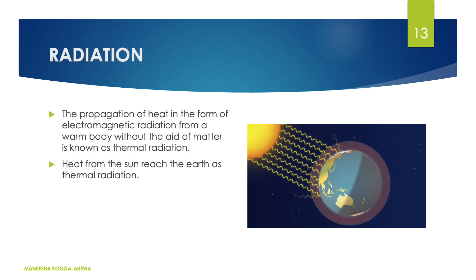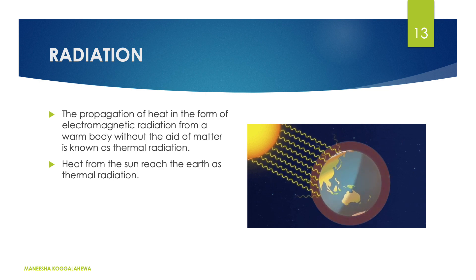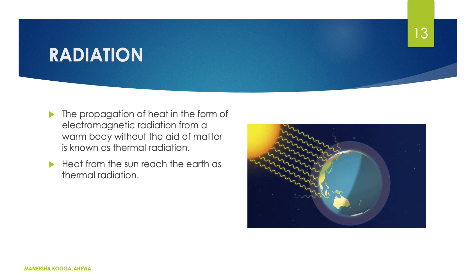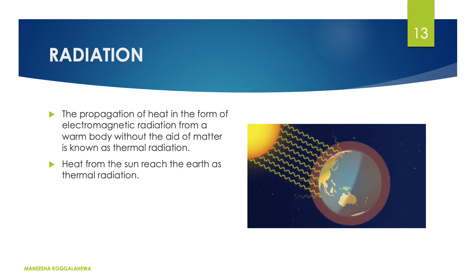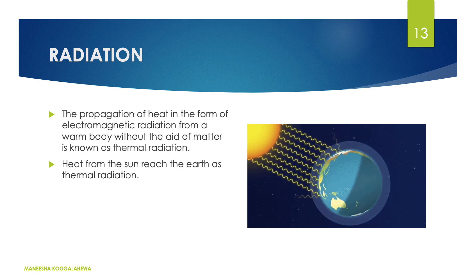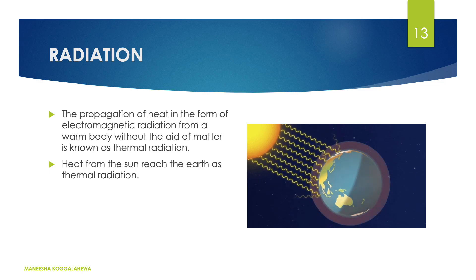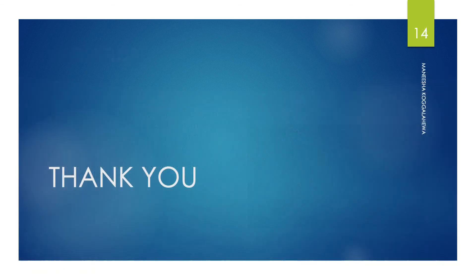Thermal radiation is the way of heat transfer without the participation of atoms. It is the propagation of heat in the form of electromagnetic radiation from a warm body without the aid of a medium. Heat from the sun reaching the earth is an example of thermal radiation. Thank you very much — hope to meet you soon with a new lesson.